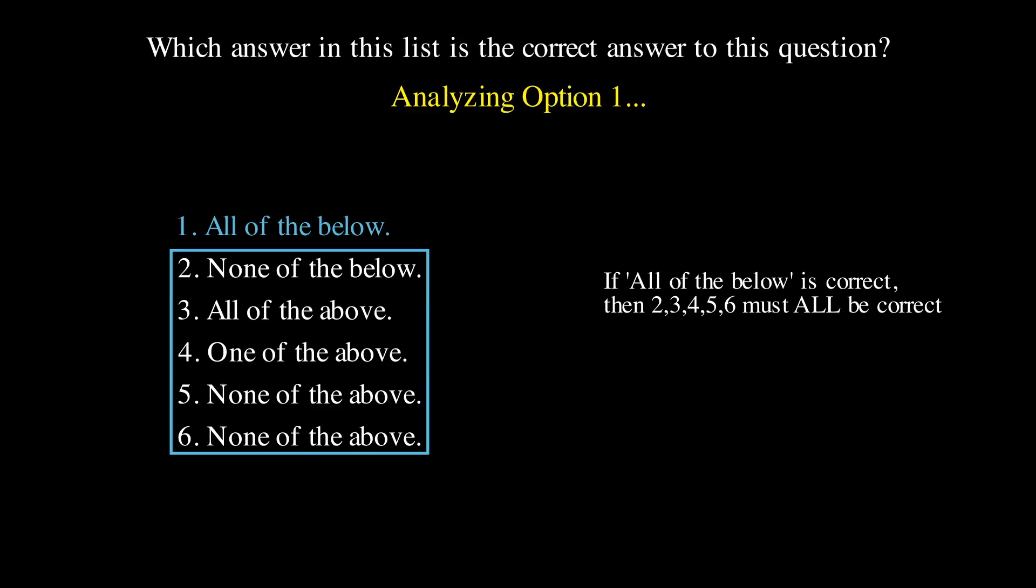But option two says none of the below, and option three says all of the above. These two directly contradict each other. They can't both be true, which means all of the below cannot be correct. Option one is out.